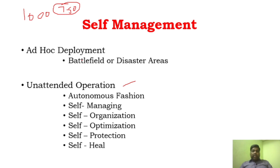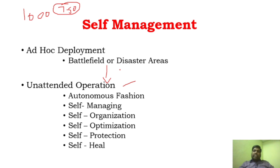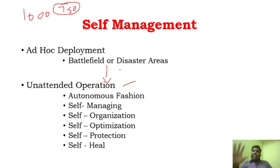Unattended operation means there will be areas where we deploy a sensor network and after that we will not be able to go and access it — we can only get the information from that sensor network. As in battlefield, military, and disaster areas, we cannot go and check what is happening exactly. Only up to the mission time, only until there is energy, can we get that information. The sensor network has to function in an autonomous fashion — it has to self-configure and adapt by itself.